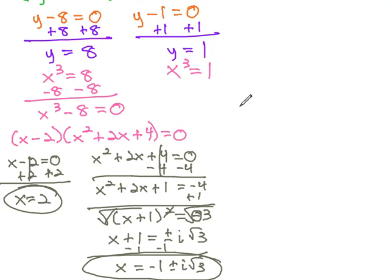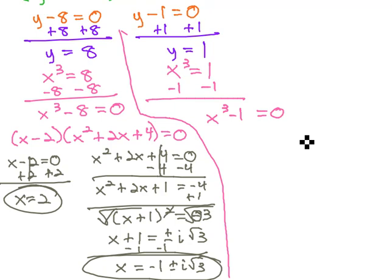However, we're not done yet, because remember that was all for the first solution. We have to do the same thing to the x cubed equals 1. Subtracting 1 from both sides of that equation, we get x cubed minus 1 equals 0, which again is a difference of cubes that factors to x minus 1 and x squared plus x plus 1 equals 0.